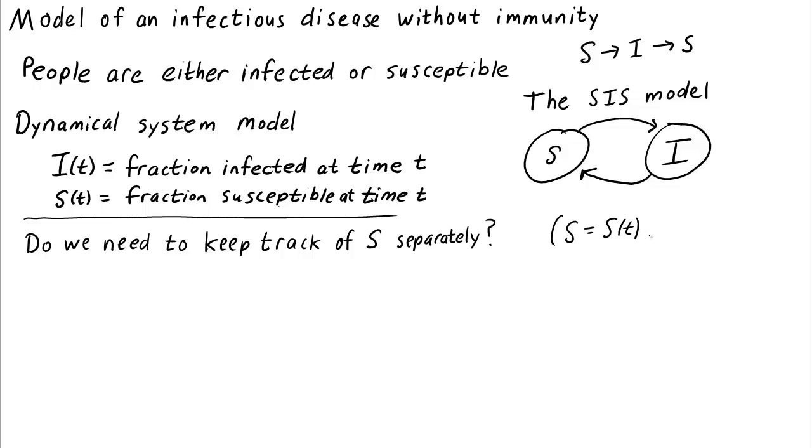And the same thing is true for i or i(t). So if we know i or i(t), what is S or s(t)? If people are either infected or susceptible, then these two fractions must add up to 1, since 100% of the people must be either infected or susceptible. So if we know what i is, S must be equal to 1 minus i.